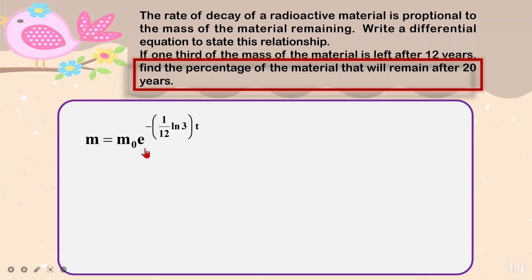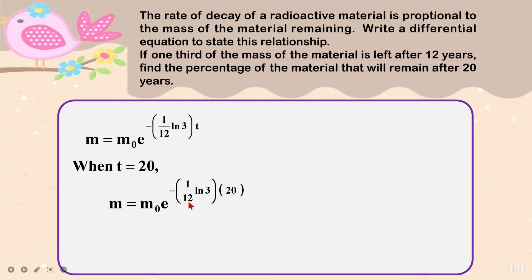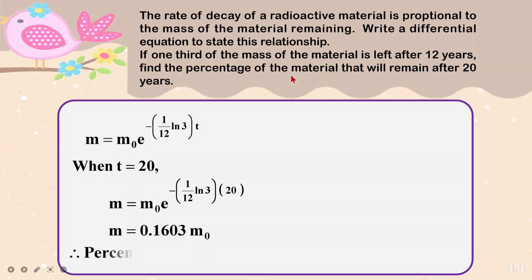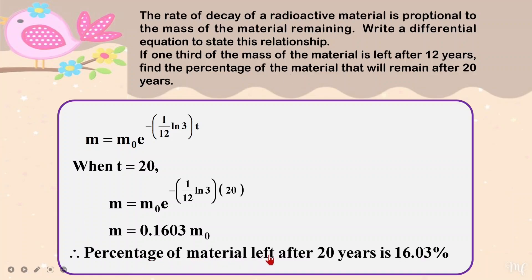Now I have the mass equation and I need to answer the last part: the question asks for the percentage of material remaining after 20 years. So I put t equals 20 into the equation and calculate. The mass that I have is 0.1603 of the original mass. They want it in percentage, so I multiply by 100% to get 16.03%.